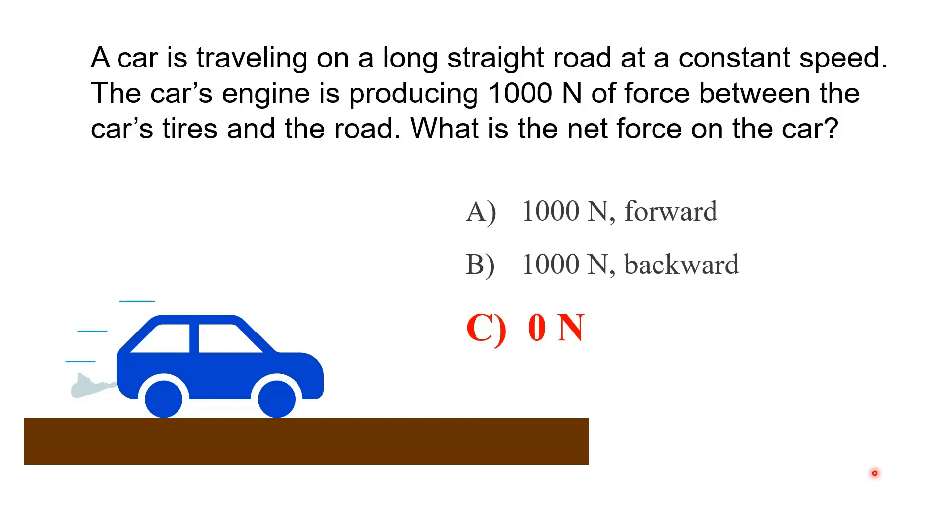So think about what's happening in this case. The car is traveling on a straight road. So it's just one direction. It's not changing. That's what's being implied. And it's traveling at a constant speed.